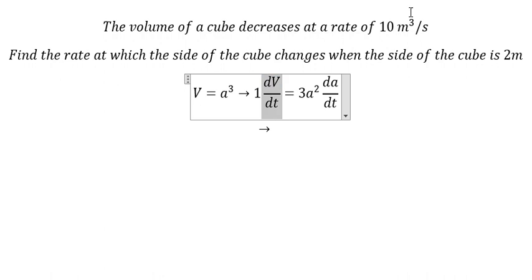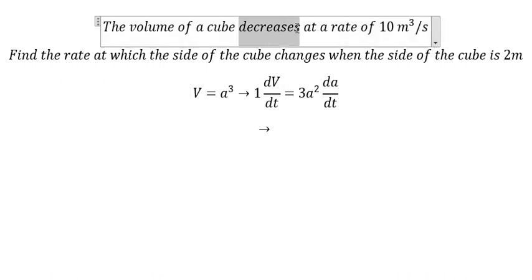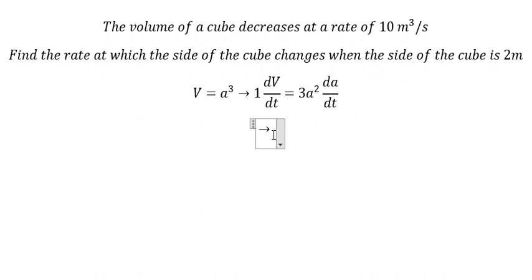Because this is about decrease, dV/dt should be negative 10. The side a is 2.